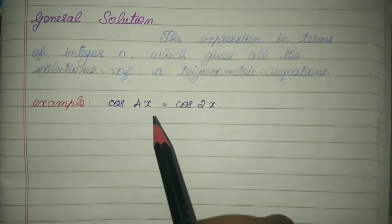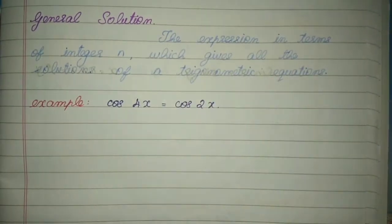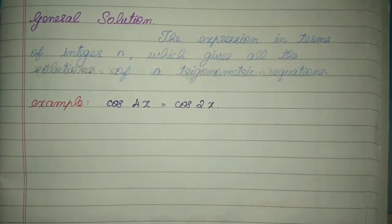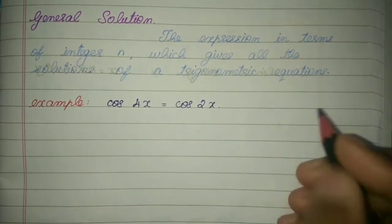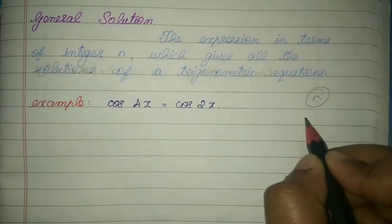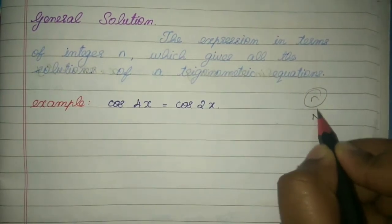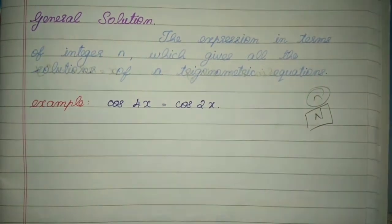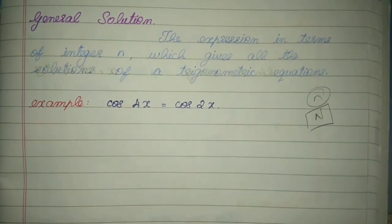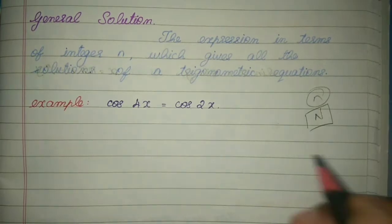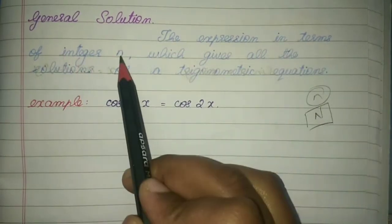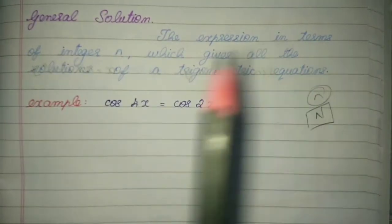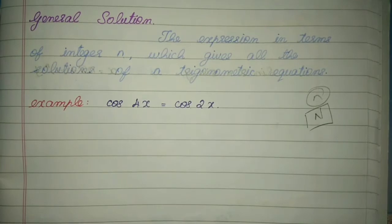Next topic is general solution. In the principal solution we directly found the answer in the form of radians. In the general solution, we are expressing something in terms of a general integer n — just as natural numbers are denoted by capital N. We will not be directly finding a specific value; instead we find the general term. The expression in terms of integer n which gives all solutions of the trigonometric equation is called the general solution.